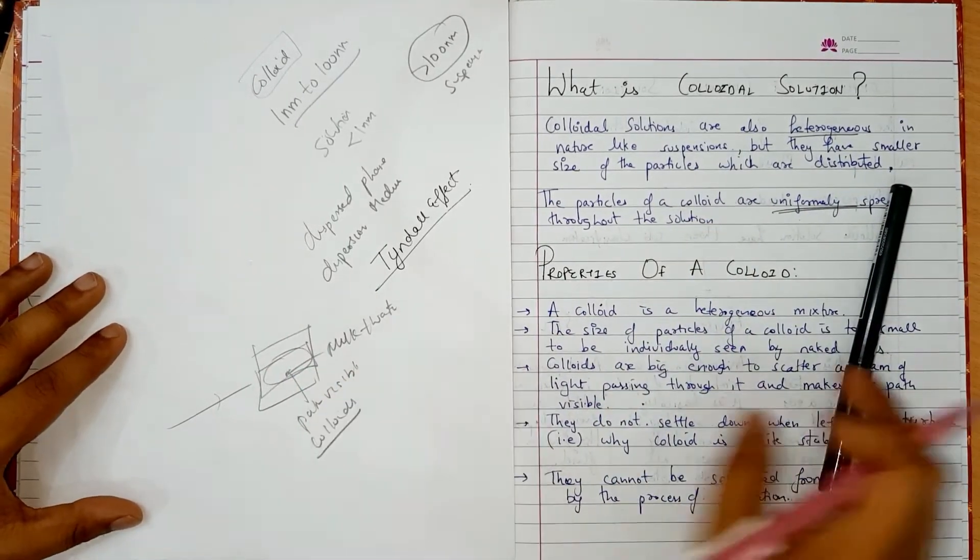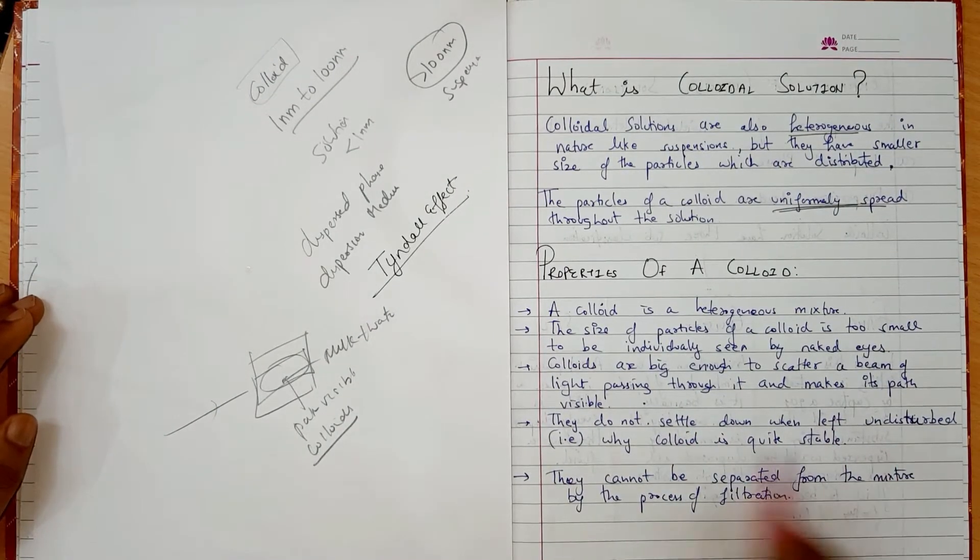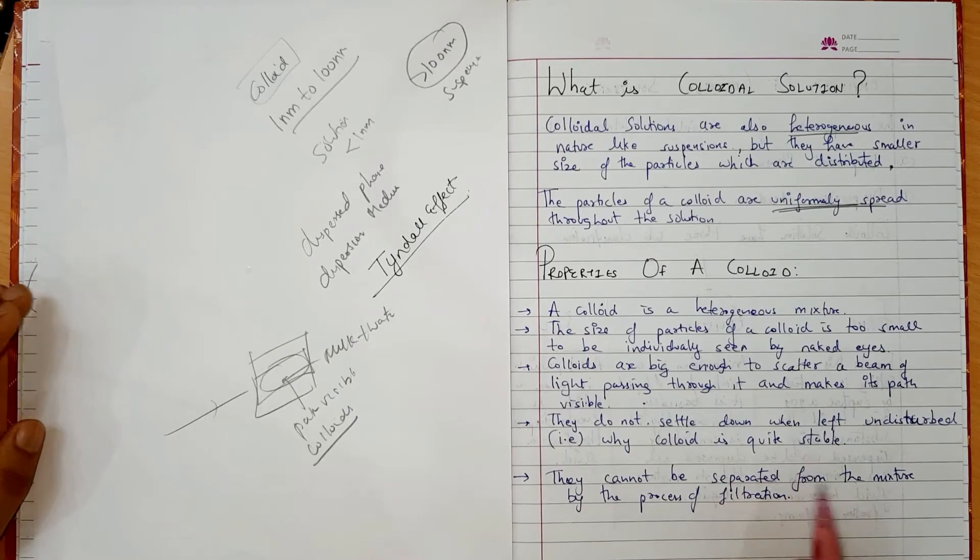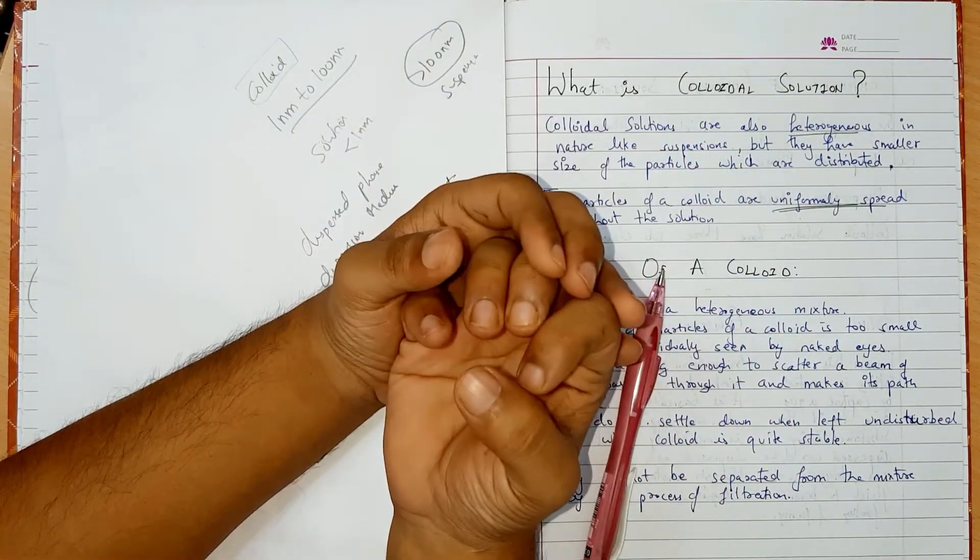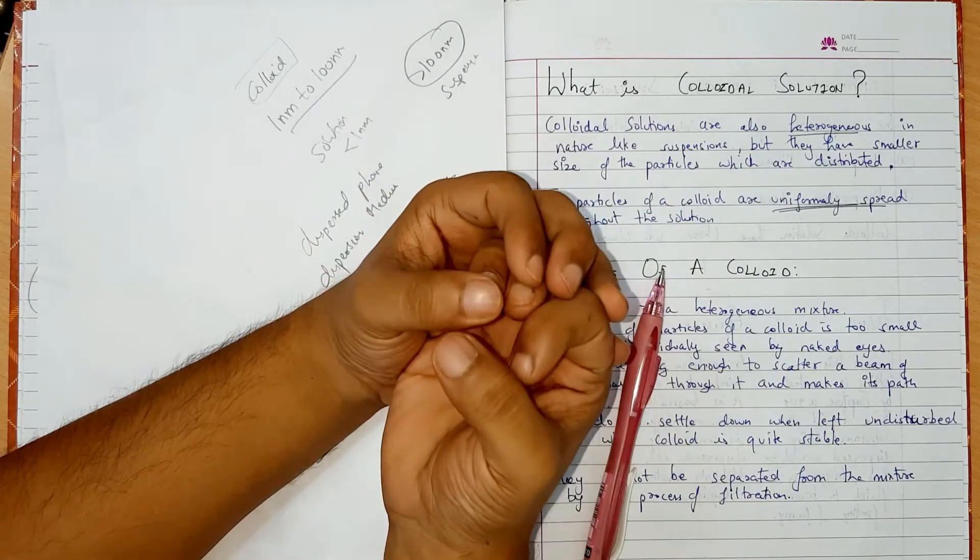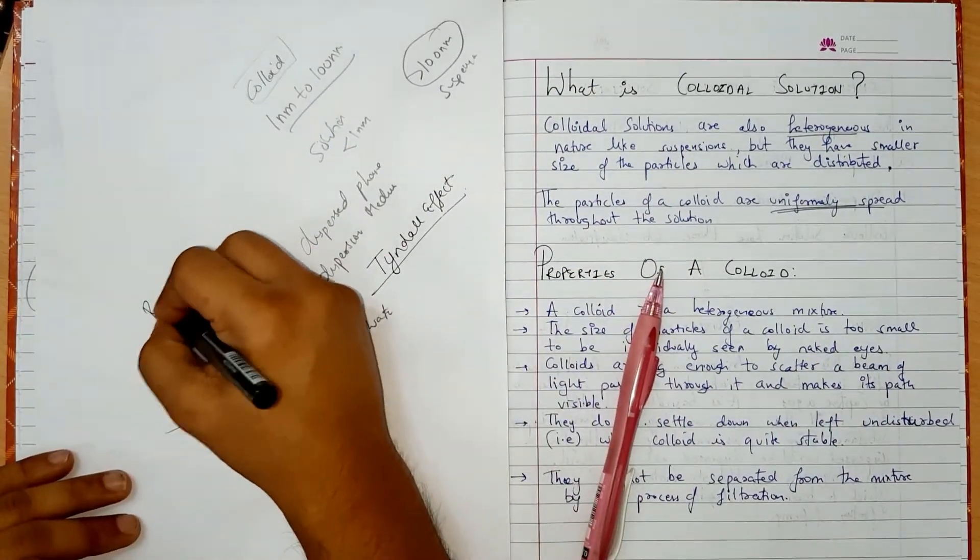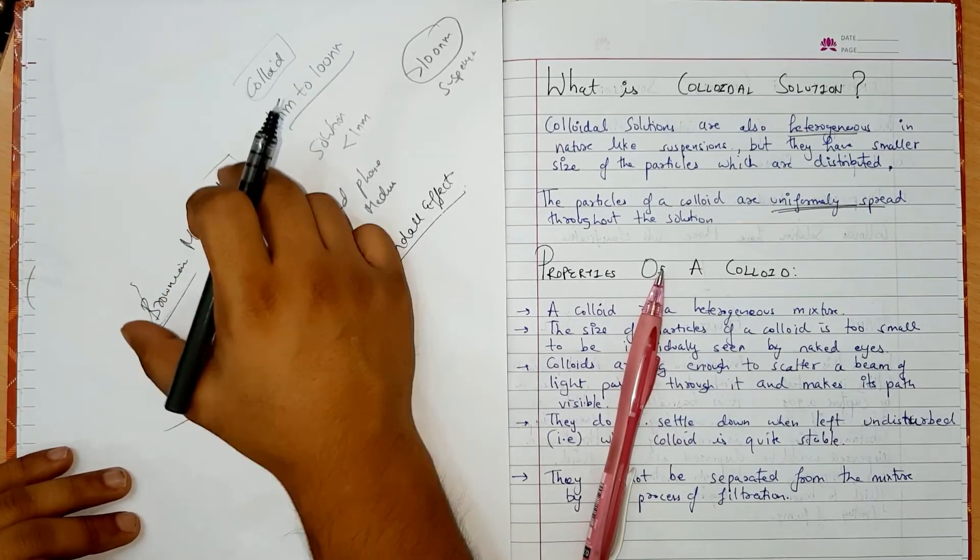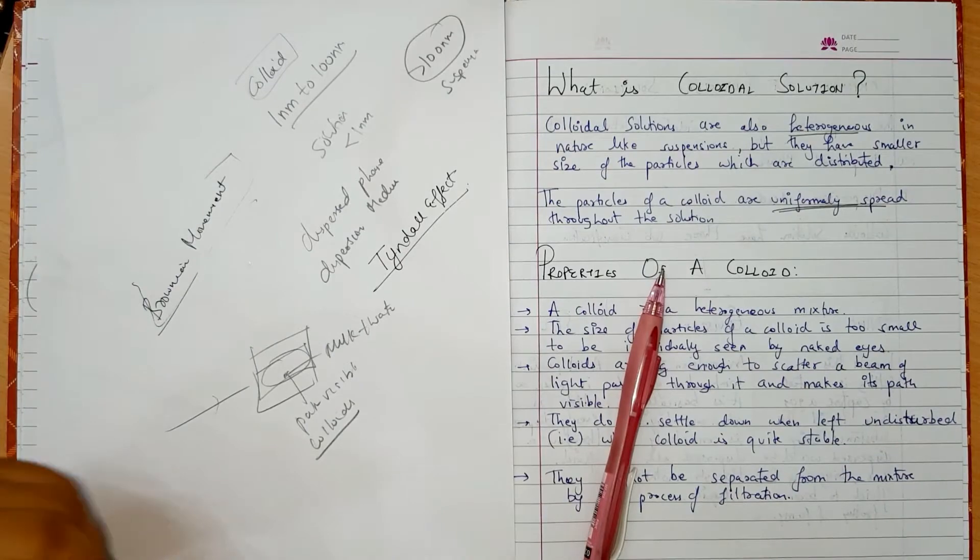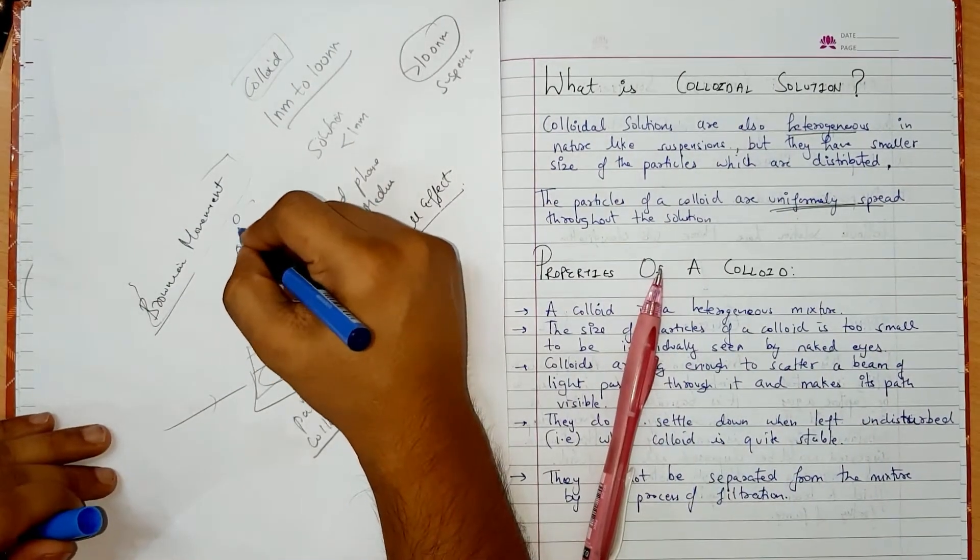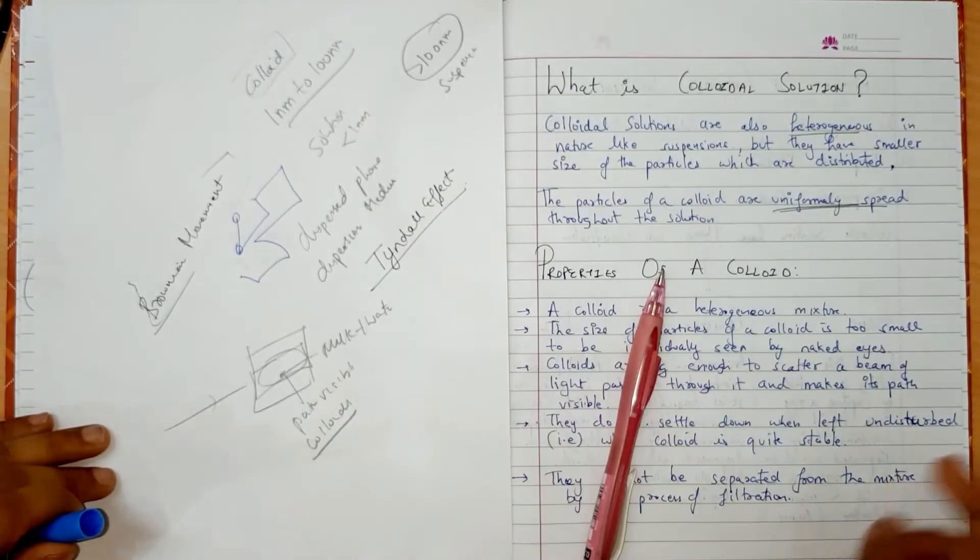Next point, they do not settle down when left undisturbed. That is why colloid is quite stable. It will continue to move. After that, the reason is Brownian movement. The main concept, the particles, the zigzag motion move. That is why it is stable.